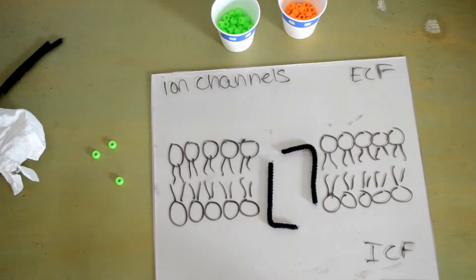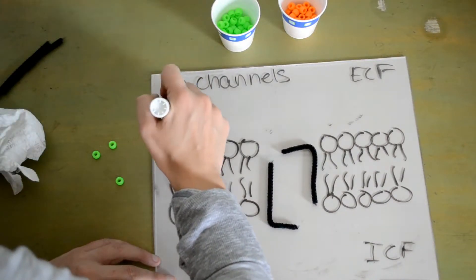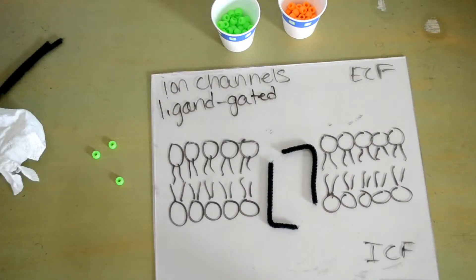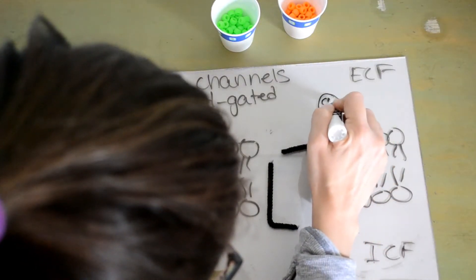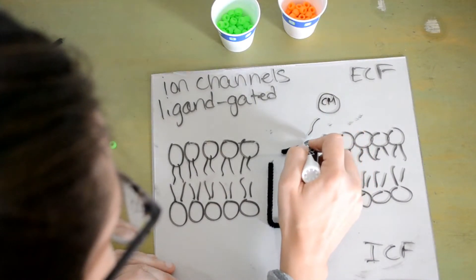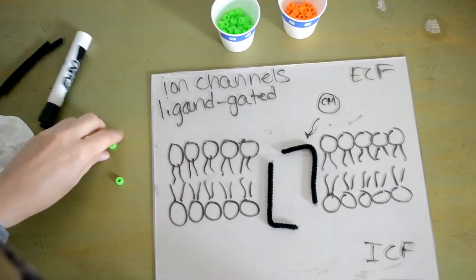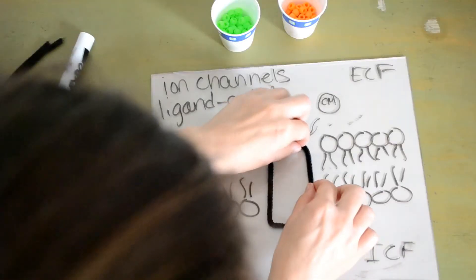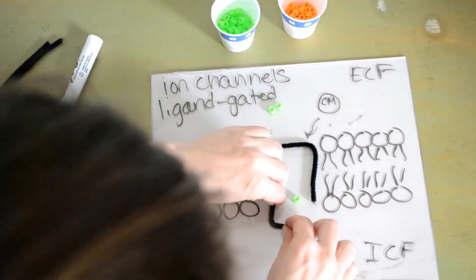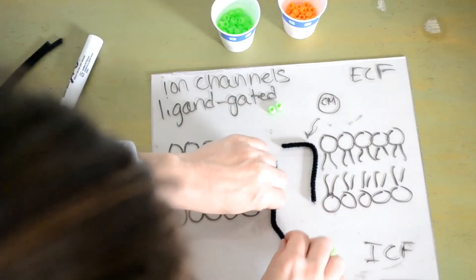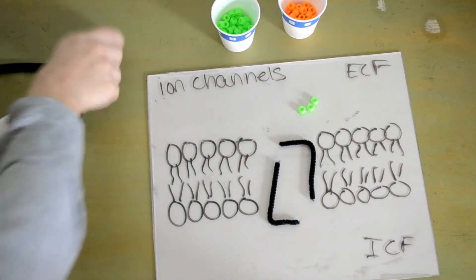Then we have ligand-gated ion channels, which are ion channels that are activated by a chemical messenger. If we have, let's say, this is our chemical messenger — it comes along and it activates our ion channel to open, allow the ion in, pushes it through, and into the cell.